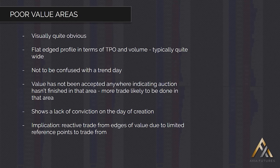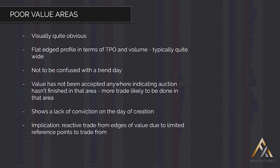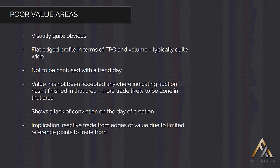So what does this mean implication-wise and where have you got to trade? The implication is you don't have a market that knows exactly where it wants to trade. Therefore it's got no clear reference point within value, because every price has been pretty well traded. So you get reactive or responsive trade from the edges of value, meaning that each time we get to an edge of value, you'd expect at least on the first touches of each side of value for the market to then react.